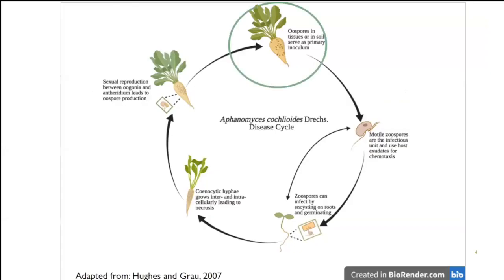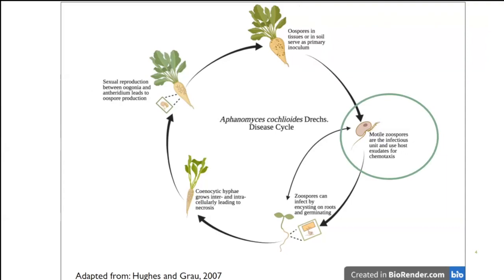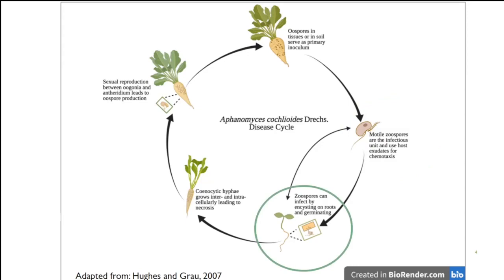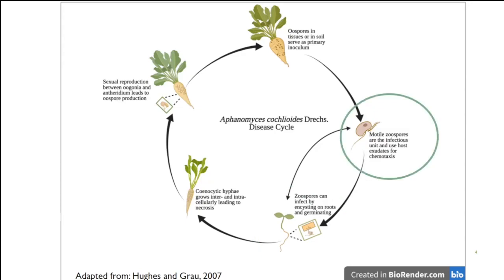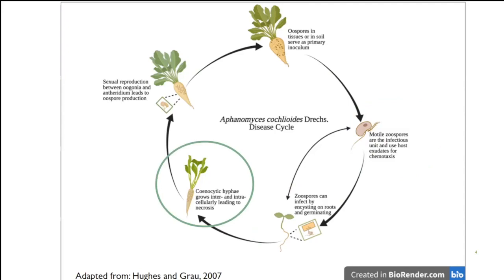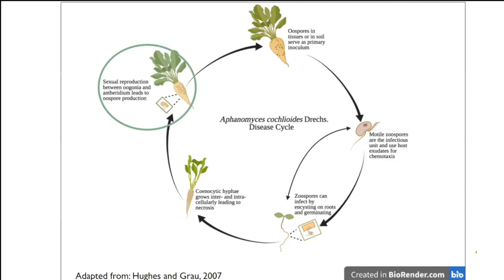In terms of disease cycle, zoospores are our primary inoculum. Motile zoospores are the infectious unit, so they can swim to roots — this is what I use as my inoculum source. Zoospores can encyst on roots and start breaking into root material, and that part of the cycle can repeat a lot. We see hyphae grow intracellularly in root tissue. Eventually we will see sexual reproduction — it can sexually reproduce with itself, and that produces oospores, which can then last at least 10 years in debris or soil.